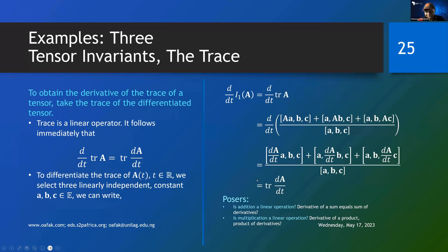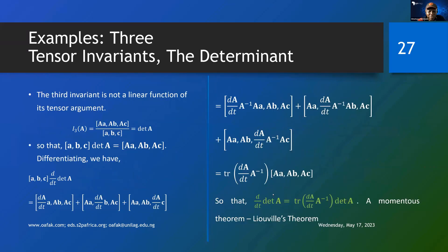Trace is a linear operation. The trace of a sum is the sum of traces. The trace of a weighted sum is the weighted sum of the traces. And the trace of a derivative is the derivative of the trace. Then we went to some examples where we differentiate with respect to T the determinant of A. Working through that, we got an important result called Liouville's theorem — which will come up when we get into continuum mechanics proper. So that is where we reached last time.